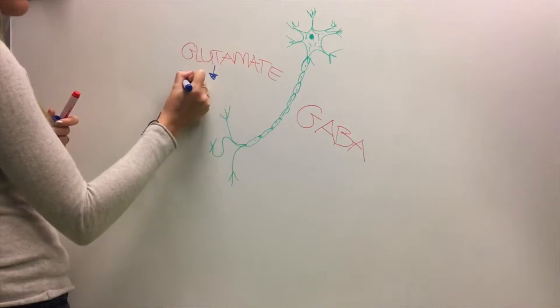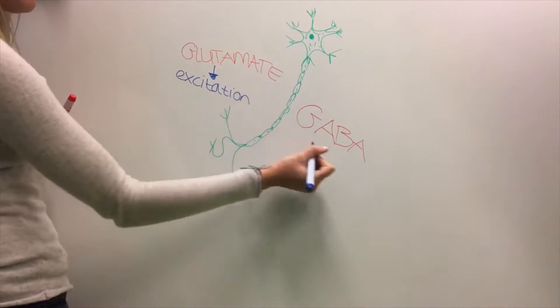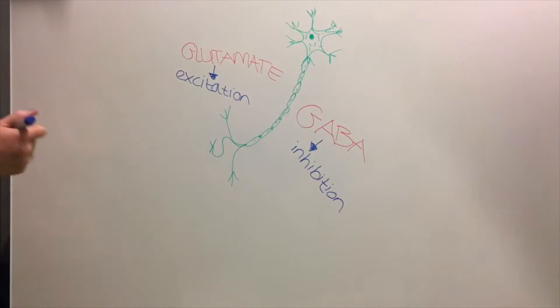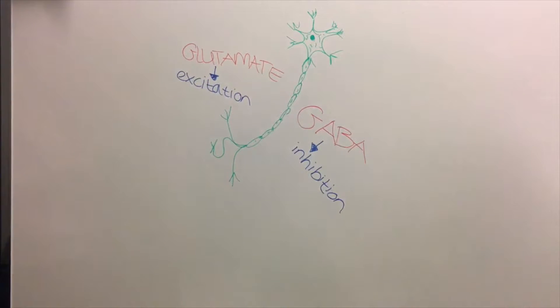Ethanol is able to affect both excitatory and inhibitory neurotransmitters. Excitatory neurons use glutamate while inhibitory neurons use GABA. Glutamate normally increases brain activity and energy levels whereas GABA does the opposite.